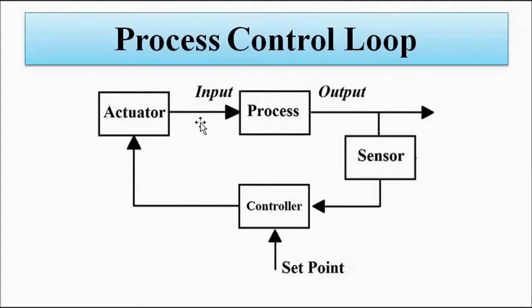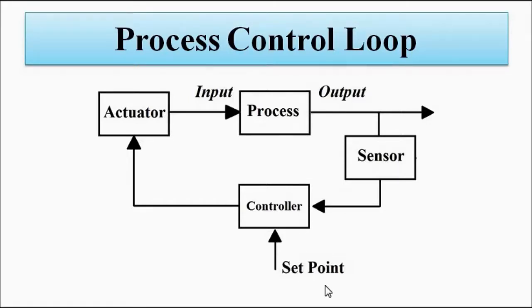A basic process control loop operates with the process having an input and an output — that is a simple open-loop process. When a feedback path is involved, various other components come into play, such as a sensor or transducer that measures the output and gives that reading to the controller, where it is compared with the set point value — the desired output value. The controller then calculates the error signal, the gap between the actual and desired output, and takes suitable control action via the actuator to manipulate the input to the process.